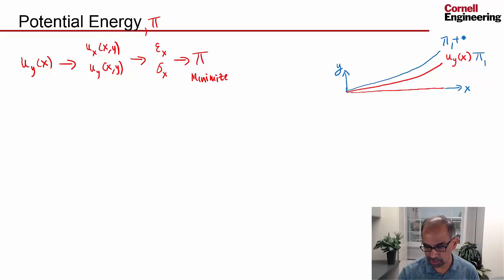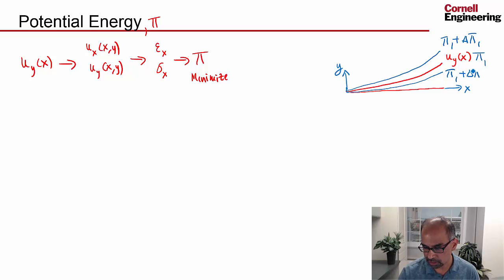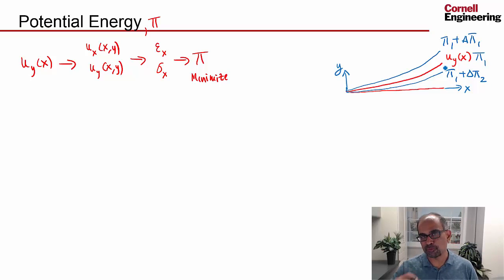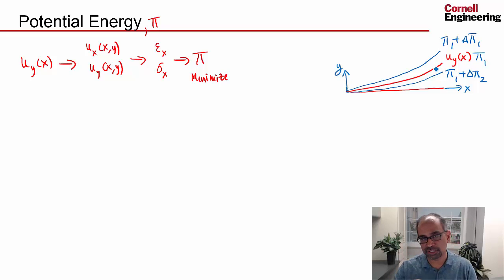The increase is some Delta Pi 1, and this is going to be positive. Similarly, if I perturb it in the other direction — this is just one candidate — let's say this is Pi 1 plus Delta Pi 2, some value. So, whichever way, once I have the correct solution, whichever way I perturb the neutral axis, the corresponding energy is going to be higher. That's how I know I have the right solution.